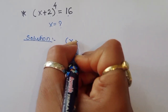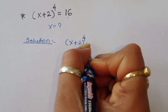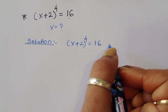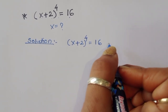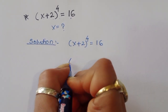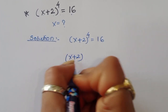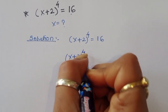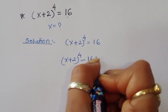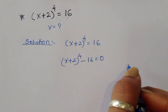We have (x + 2)⁴ = 16. We can rearrange this: (x + 2)⁴ minus 16 is equal to 0. We can write it this way.